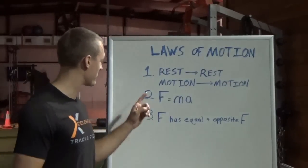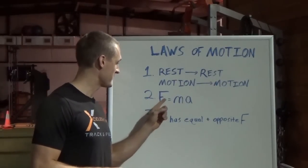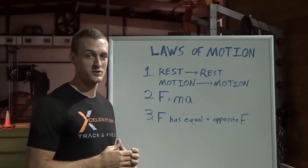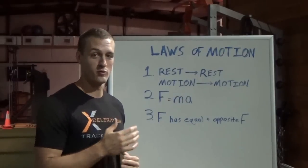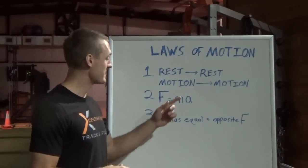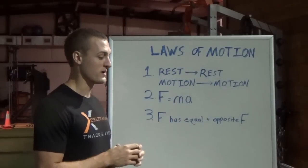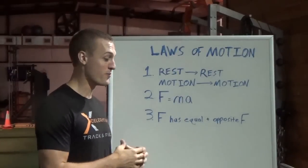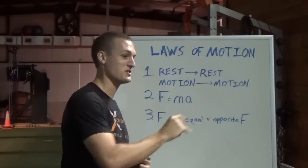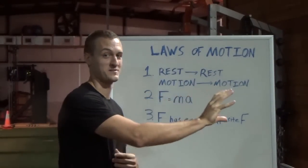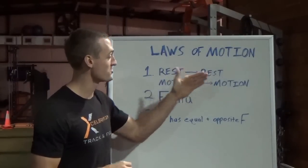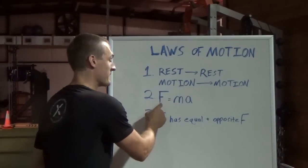We're going to start with number two: force equals mass times acceleration. It's a very simple equation. Basically, when you put force on an object, you're going to get acceleration that is directly proportional to that force. Now, if you have zero force, then you get zero acceleration. So if an object is at rest and you don't put a force on it, that object will not accelerate. And if that object is in motion at a constant velocity and you don't put force on it, that object will continue to move at a constant velocity. So the first rule — objects at rest tend to stay at rest, objects in motion tend to stay in motion — is really just a particular component of the second rule.